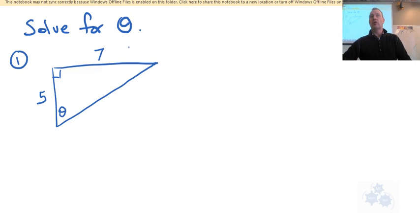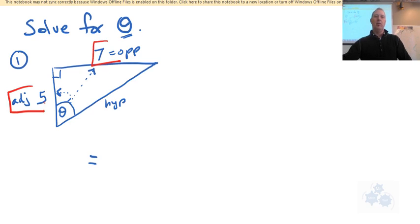Now actually, we have enough information right now to solve for theta, because we want to write an equation with only one missing piece, or one variable. And the variable we're going to use is theta. That's what we're solving for. So what side is 7 compared to theta? That's right. It's the opposite side. Very good. What side is 5 compared to theta? It is. It's the adjacent side. And of course, this would be the hypotenuse.